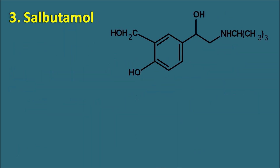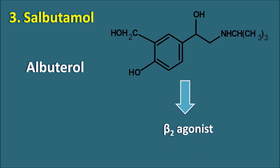The third one is salbutamol. Salbutamol is having a structure with some structural similarity to the catecholamines. This drug can be considered with an alternative name albuterol. So salbutamol is also called as albuterol, and this drug acts as a beta-2 agonist. Beta-2 receptors are abundant in the bronchial smooth muscle, so when this drug is given it produces relaxation, acting as a bronchodilator used in treatment of asthma and COPD.